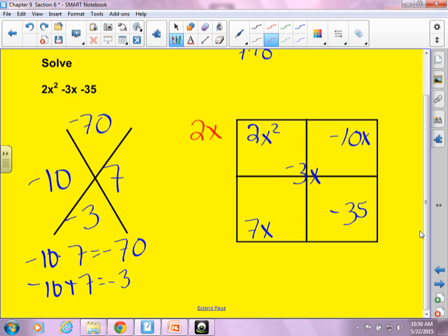2x goes here. How about here? 1x. How about here? Negative 5. How about here? 7. If I multiply the negative 5 and the 7, do I get negative 35? Yes. So I end up with x minus 5 and 2x plus 7. And what do I do if I'm supposed to solve?